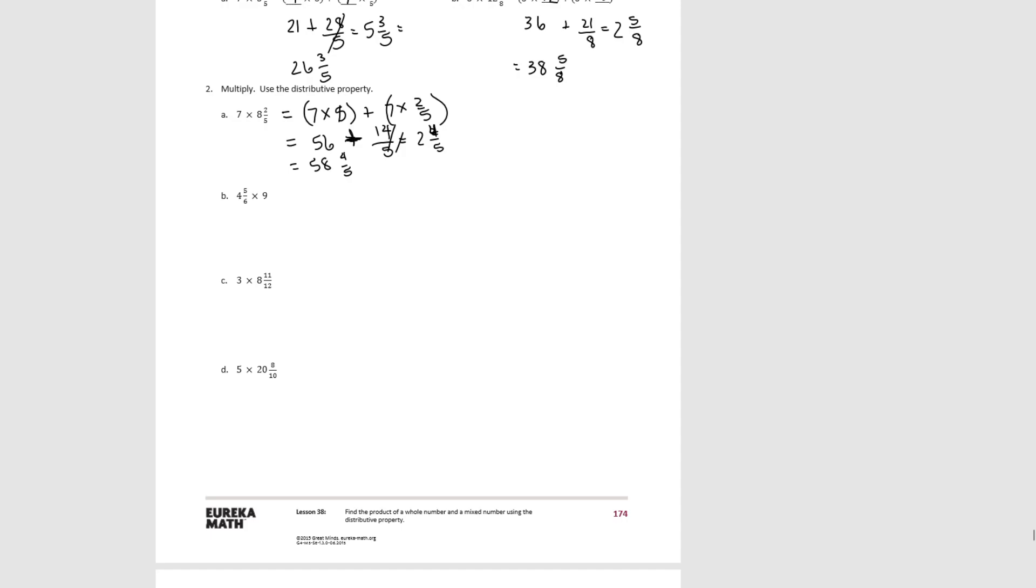For B, we get 4 times 9 plus 5 sixths times 9. When we multiply, we get 36 plus 45 sixths. So this would give us 7 and 3 sixths, which when we add together would be 43 and 3 sixths, which would simplify to 43 and 1 half.